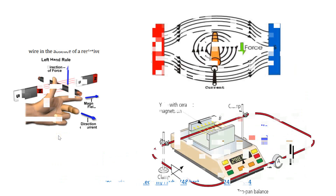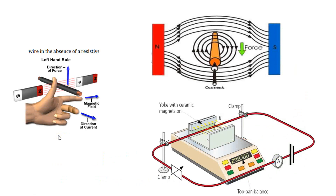Fleming's left-hand rule, as it indicates, means that you're going to use your left hand. There are certain ways in which your left hand has to be positioned. Your thumb must form a right angle with the first finger, and your first finger must form a right angle with the second finger. So at all times, the thumb, the first finger, and the second finger will each have a right angle to each other. That's how we position our hands in order to understand this.